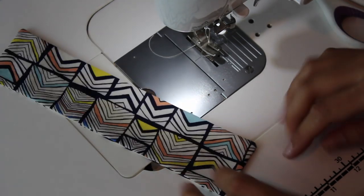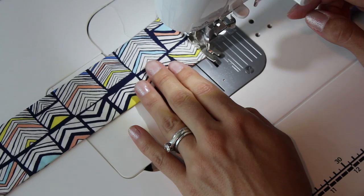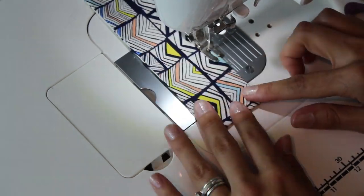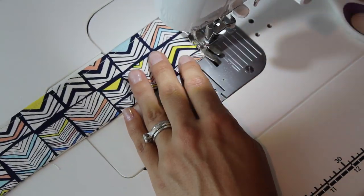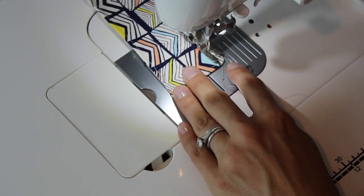And now we're going to stitch going all the way around to close that opening and to give it a nice finished look. Don't forget to backstitch. And go ahead and go all the way around about an eighth of an inch. And backstitch again at the beginning.